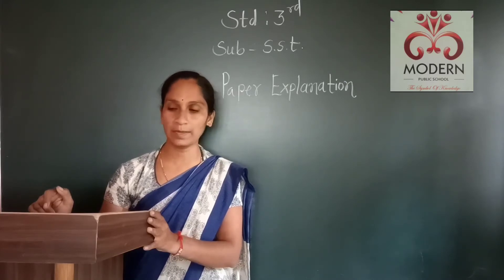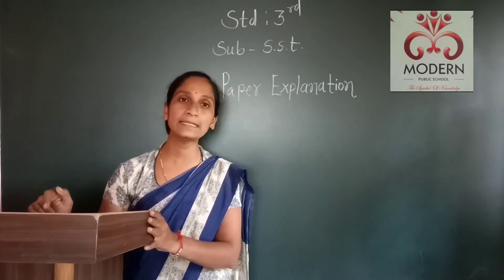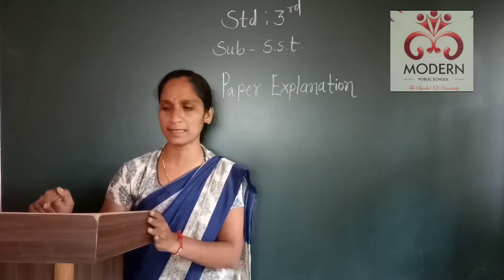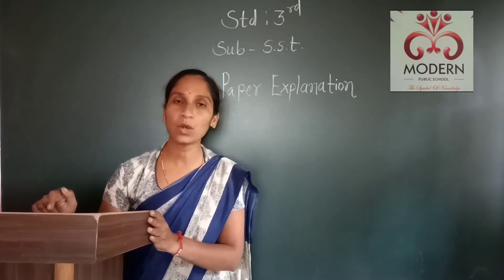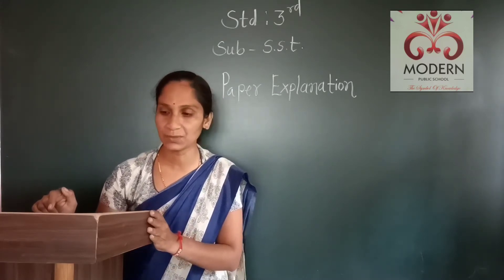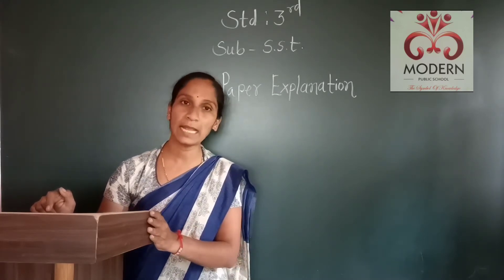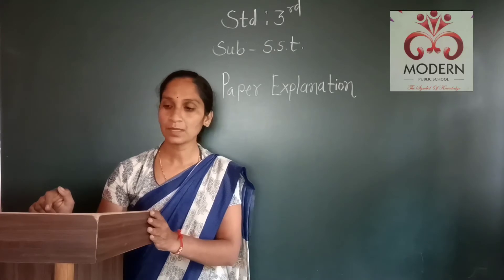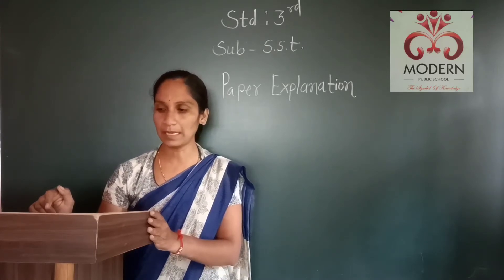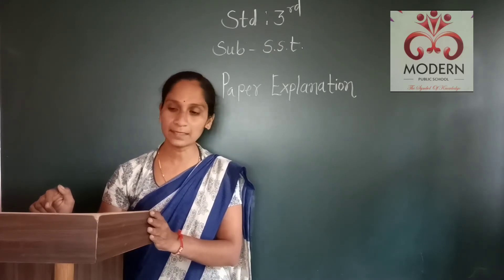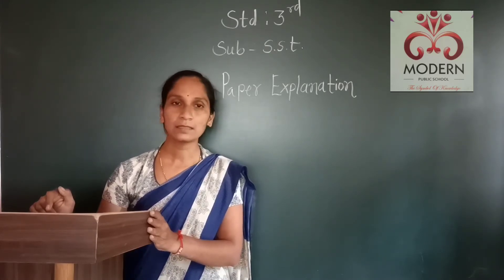Second: A/An [blank] are land masses surrounded by water on all sides. Option A: island, Option B: plateau, Option C: plate, Option D: detachable.